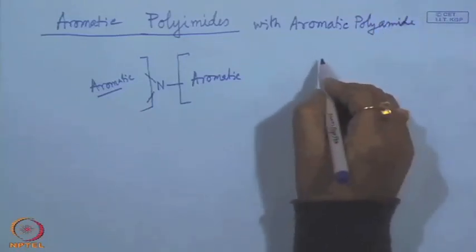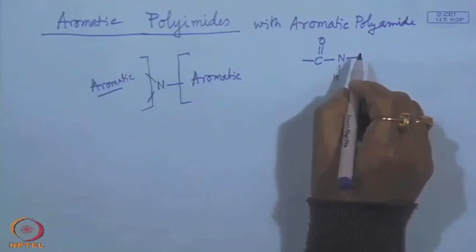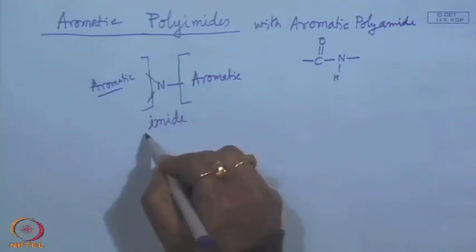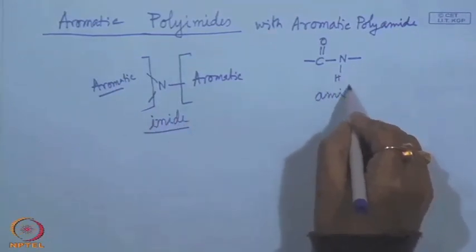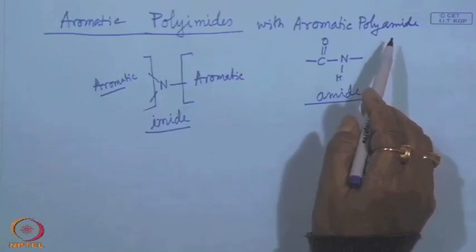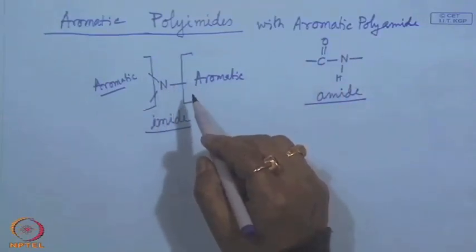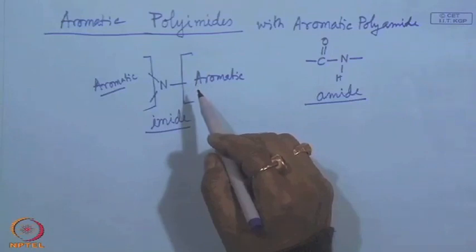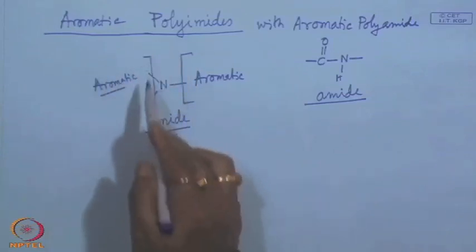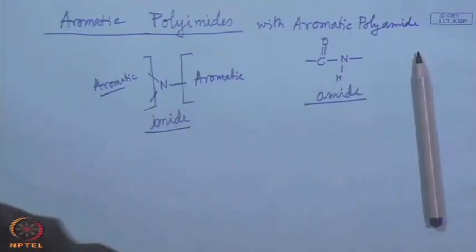Polyamides contain amide linkage — CO-NH — whereas polyimides contain imide linkage. If there is amide linkage, we call it polyamide or nylon; if there is imide linkage, we call it polyimide. There can be many different polyimides depending on the groups on either side. These polyimides are high-temperature resistant polymers as well as resistant to solvents and chemicals.